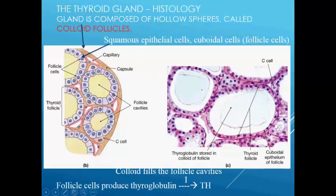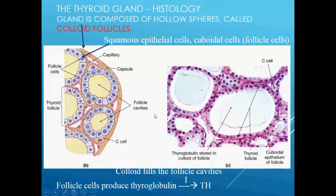This is the thyroid gland histology — these are the follicular cells, and this is the parafollicular cell, that is the C-cell. Thyroglobulin is present in the cavity of these cells. These are the cuboidal epithelium which produce T3 and T4. The gland is composed of hollow spheres called colloid follicles, which have a cavity in the center.